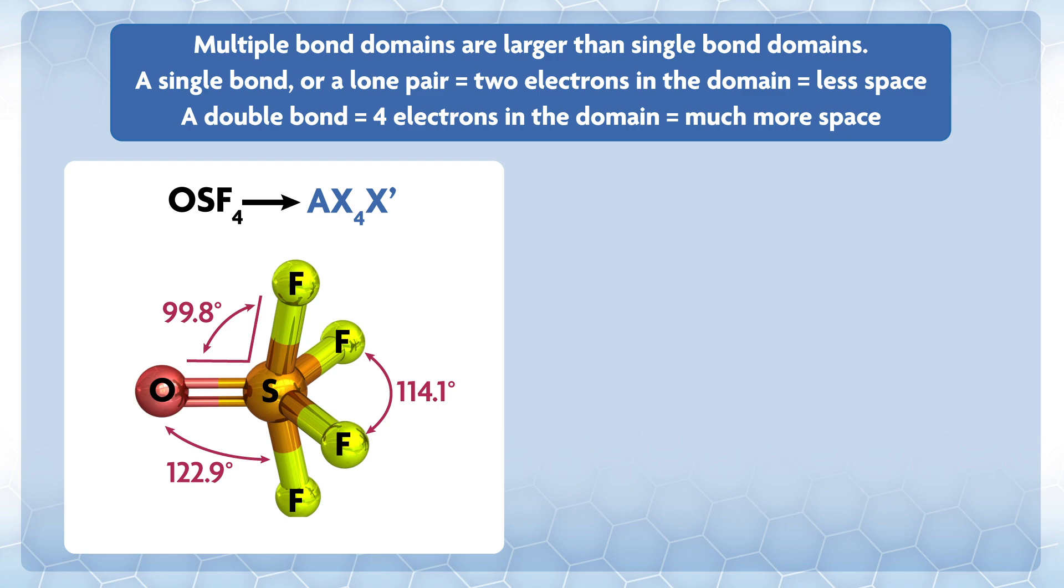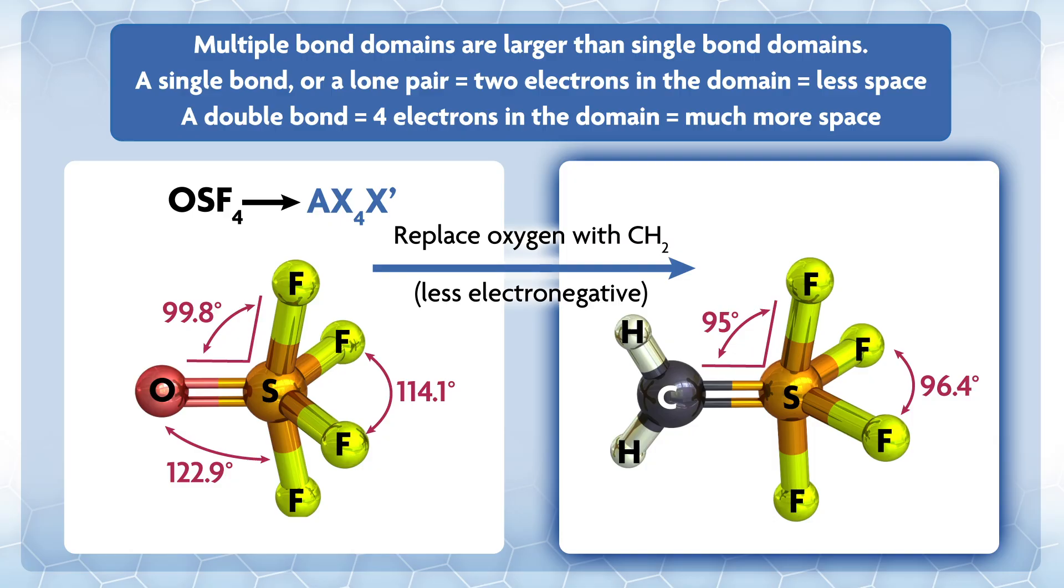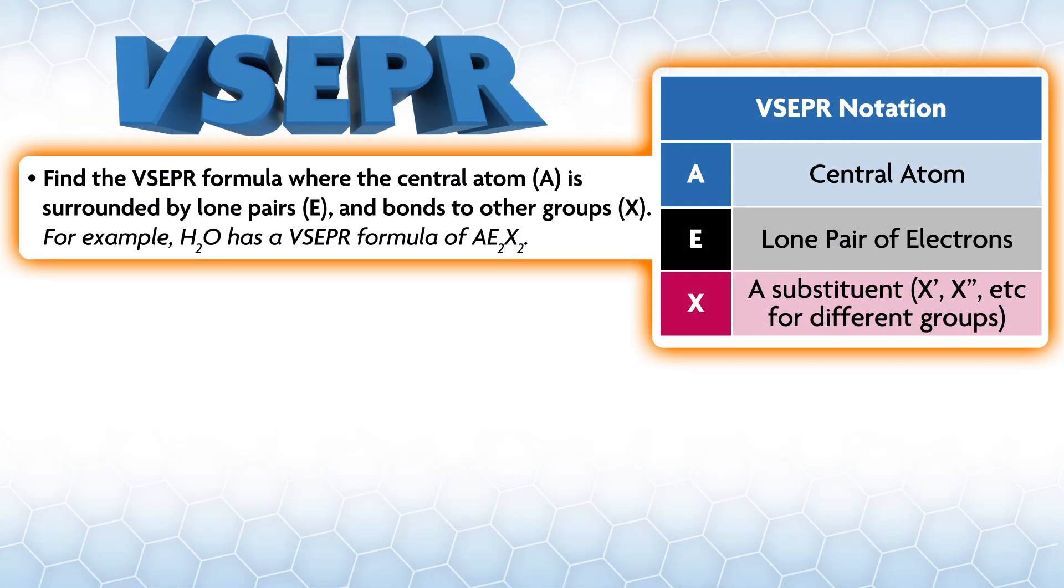As you might expect, multiple bond domains are larger than single bond domains. If you have a single bond or a lone pair, then there are two electrons in the domain. If you have a double bond, then there are four electrons in the domain and it takes up much more space. For example, OSF4 has a TBP structure AX4X'. The larger double-bonded oxygen goes in the equatorial plane as expected, but it also takes up more space in the plane, shrinking the F-S-F angle to 114 degrees from 120 in the base structure.